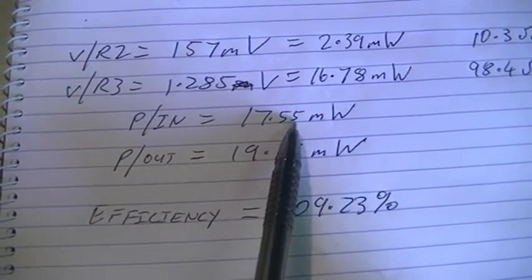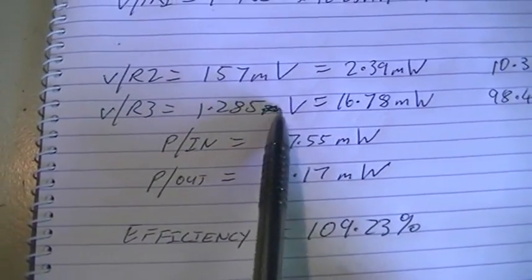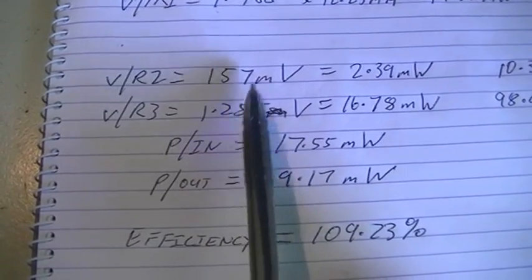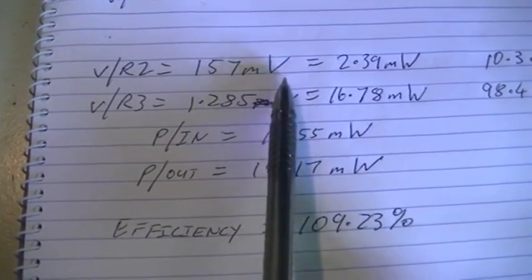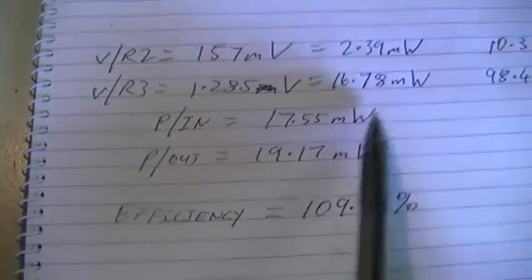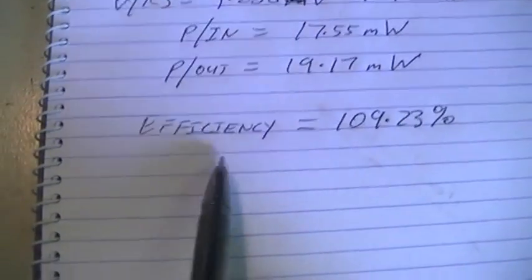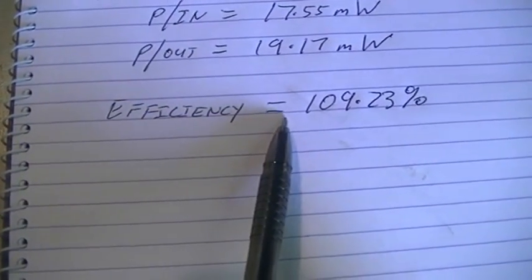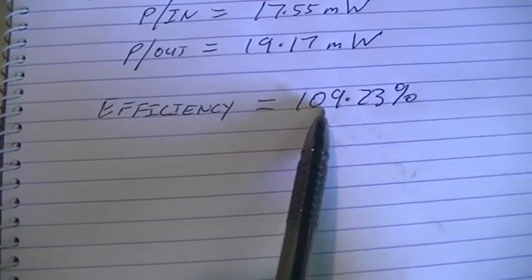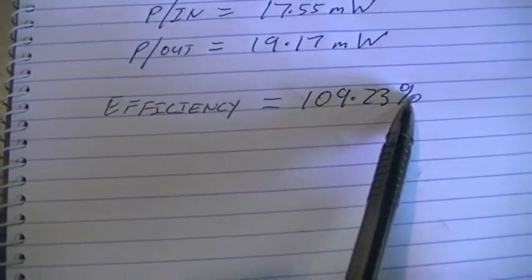So our power in is 17.55 mW, our dissipated power across our two resistors added together gives us a total of 19.17 mW, so our efficiency calculates out to be 109.23% efficient.